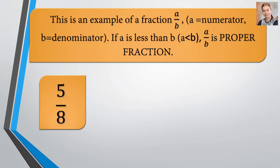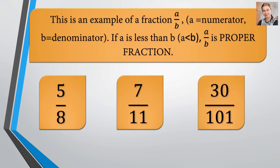Examples: 5 over 8, 7 over 11, we have 30 over 101. If you observe guys, in our example, our numerator is less than the value of the denominator. Kapag ganyan yung example, na mababa yung value ng nasa itaas na numero kaysa sa baba, that will be considered as the proper fraction.